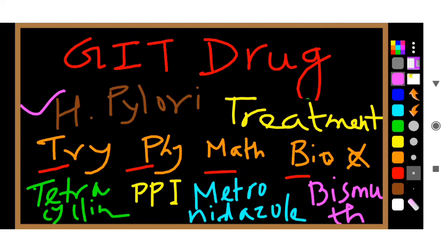To summarize: T means Tetracycline, P means PPI, M means Metronidazole, and B means Bismuth — that is the H. pylori treatment regimen. Thank you so much for watching. If you like this video, give a thumbs up and subscribe. This channel is for helping MBBS students. We have crossed 750 YouTube subscribers and 750 Instagram followers. Please follow me on Instagram at the Red Medico Shahan. Thank you, bye bye.